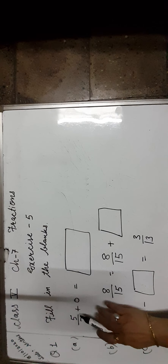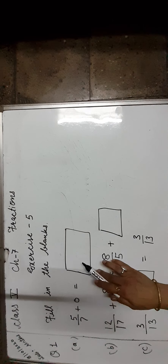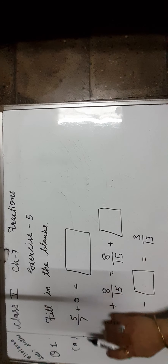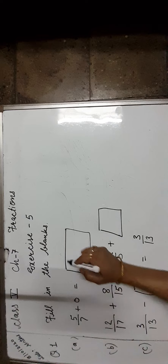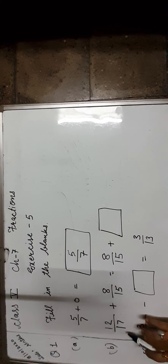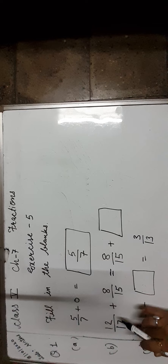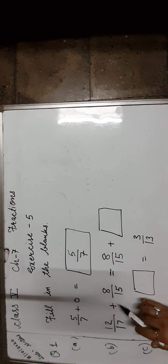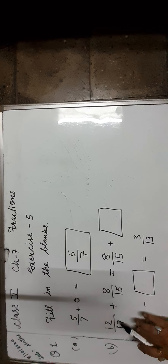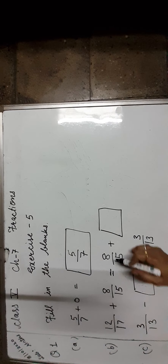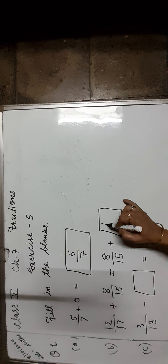A is 5 upon 7 plus 0 is equal to what? If we add 0 to a fraction, the answer is the fraction itself, that is 5 upon 7. Now, 12 upon 17 plus 8 upon 15 is equal to 8 upon 15 plus dash. Students, in addition, the order of fractions can be changed but the sum of the two fractions does not change. So it will be 12 upon 17, but in subtraction it is not possible.